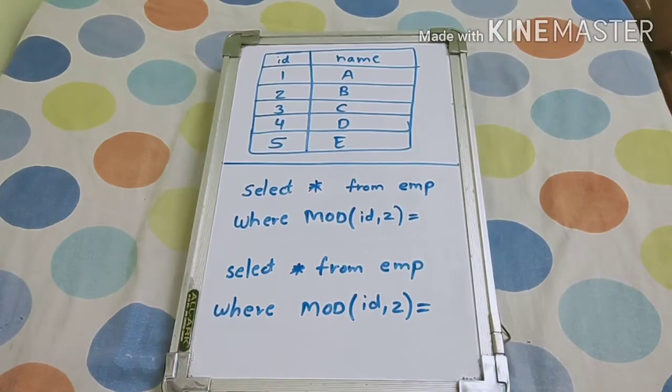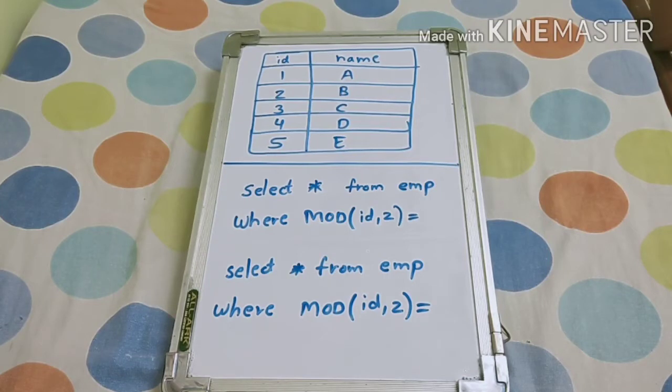Welcome back guys to the third video of the SQL interview question series. In this video, we will be solving a question that is to find the alternate records, or you can also say to find odd records or even records from the given SQL table.